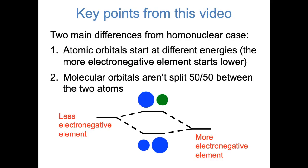Finally, I'd just like to sum up the key points from this video. We've focused on two main differences between the molecular orbital diagrams of heteronuclear and homonuclear diatomics. First, for a heteronuclear diatomic, the atomic orbitals on the two atoms start at different energies, with the more electronegative element having the lower energy atomic orbitals. And second, the molecular orbitals in a heteronuclear diatomic are no longer split 50-50: the bonding orbitals are weighted more on the more electronegative element, and the antibonding orbitals are weighted more on the less electronegative element. In the next video, we'll think about how to extend these ideas to larger polyatomic molecules.